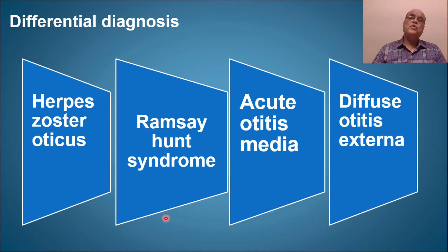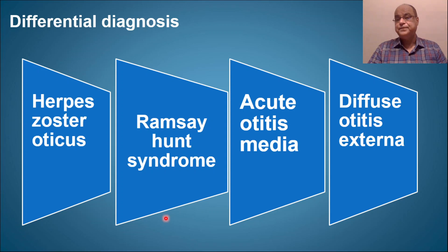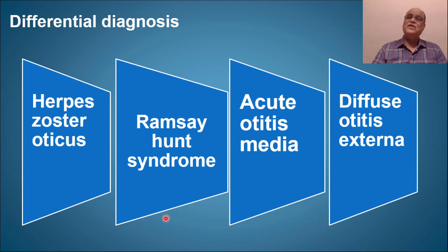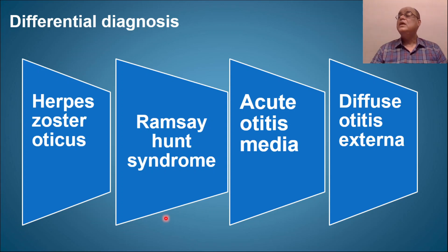Ramsay-Hunt syndrome involves herpes zoster oticus plus facial nerve paralysis, whereas in otitis externa hemorrhagica there is no cranial nerve involvement. Acute otitis media in the suppurative stage has perforation with mucopurulent/purulent discharge; pre-suppuration shows a congested tympanic membrane with cartwheel appearance from prominent vessels. Diffuse otitis externa has no blisters and generalized canal inflammation, but the tympanic membrane — if visible — is normal.